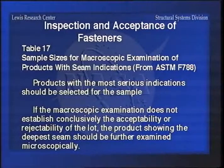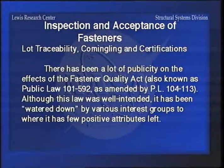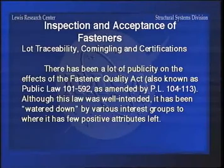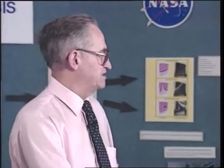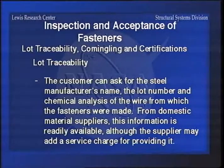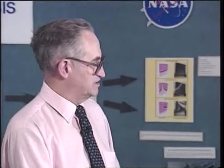There's been a lot of talk on lot traceability, commingling, and certifications concerning the Fastener Quality Act, also known as Public Law 101-592 as amended by 104-113. One of the things covered in that law is lot traceability of fasteners - the customer can ask for the steel manufacturer's name, the lot number, chemical analysis of the wire from which the fasteners were made. From domestic suppliers this information is readily available because most companies get a bill of lading with the coil material that gives all this information. On imported fasteners, it's a bit of a problem to get because you have to get the certification from the person who made it in the foreign country.